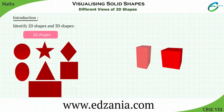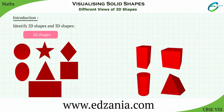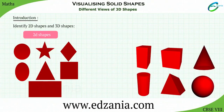Cuboid, Prism, Cylinder, Cone, Sphere are all 3D shapes.